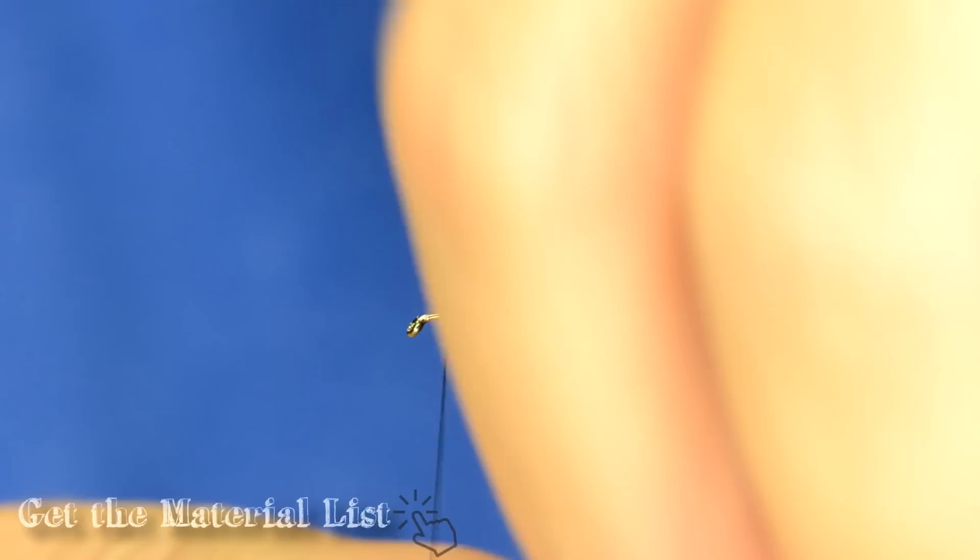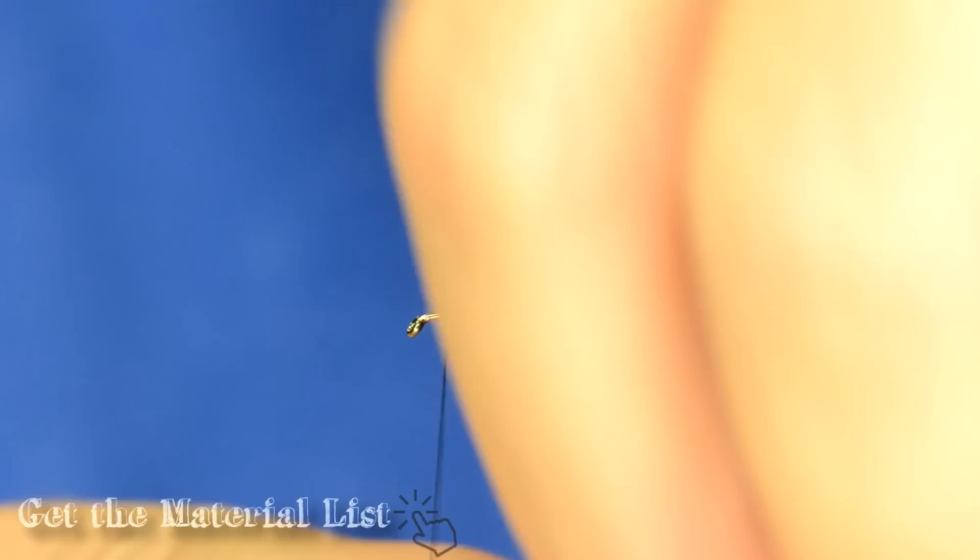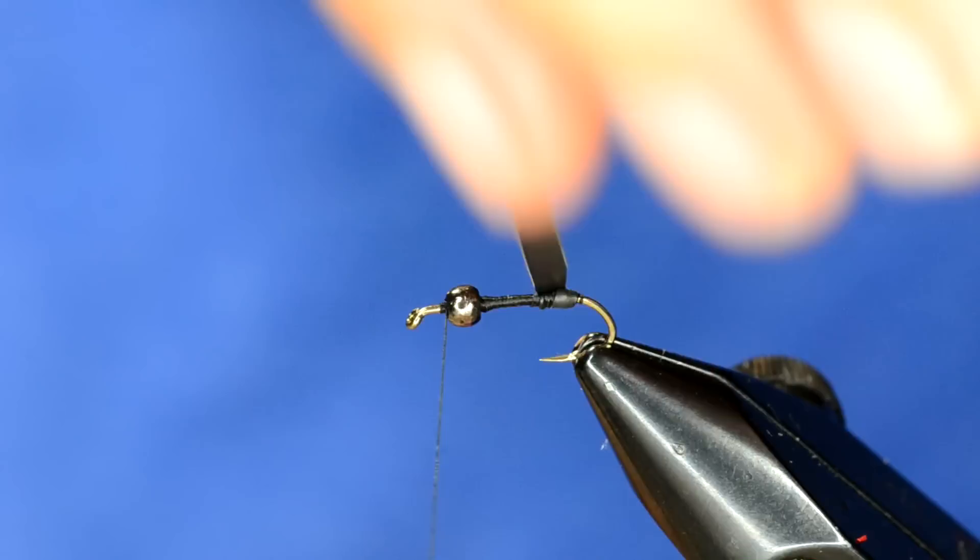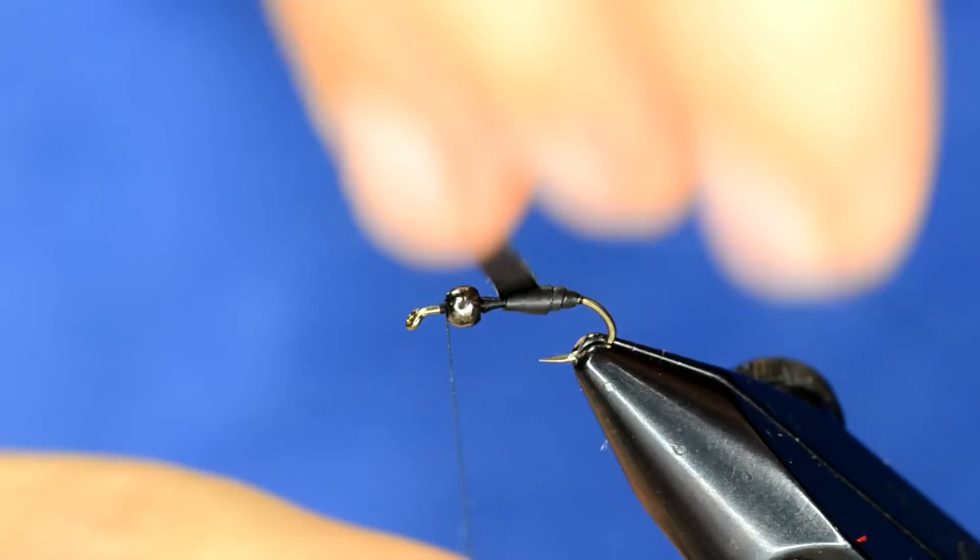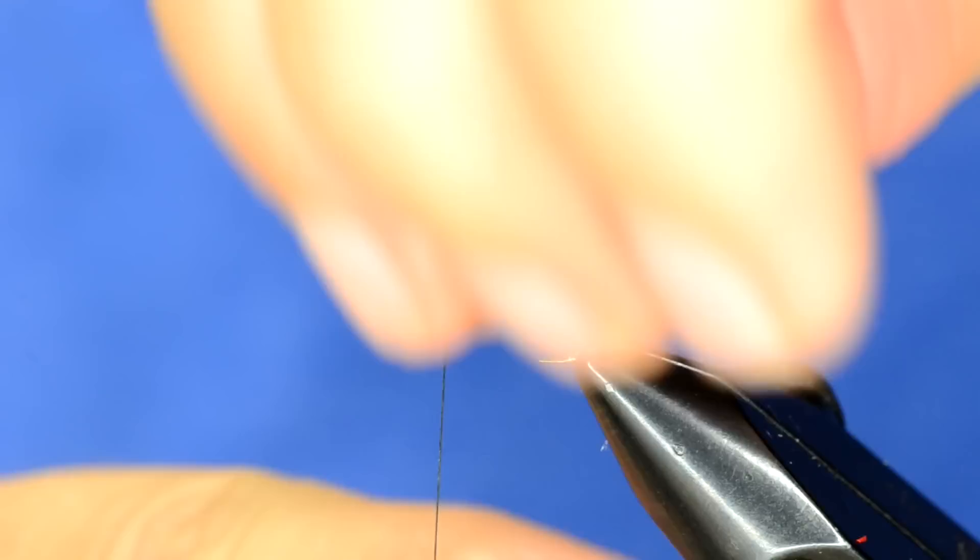And now what we do with this Nymph Skin is the first few wraps are going to be fairly tight. And you just want to overlap because we're making the shape of a snail's shell. So we're going to tighten the first couple and then loosen as we go.